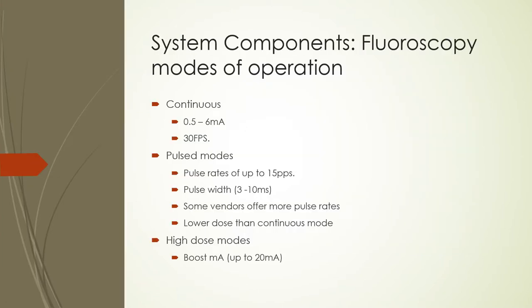Fluoroscopy can be acquired in a continuous mode or a pulsed mode. In continuous fluoroscopy, the machine produces a continuous x-ray beam of 0.5 to 6 milliamps tube current, and a video camera displays images at 30 frames per second — about 33 milliseconds per frame. For slow-moving objects, fewer pulses per second can be used; pulse widths range from 3 to 10 milliseconds. Pulse fluoroscopy offers better image quality for fast-moving objects at lower dose than continuous mode. High-dose or boost modes are available for thicker anatomies, boosting mA up to about 20 milliamps. In record or cine modes in CAT labs, some units can produce up to 600 milliamps.